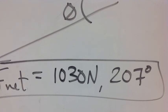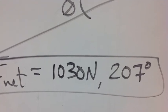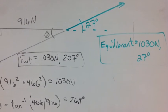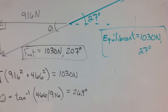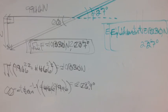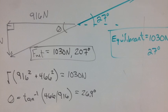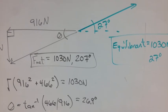Your final answer is 1030 newtons at 207 degrees. The equilibrant is the force that puts this in equilibrium, and it's just exactly the opposite direction, same magnitude of the force you just found.